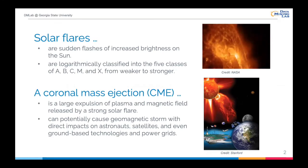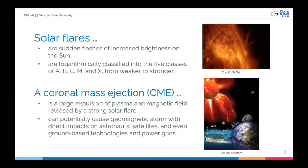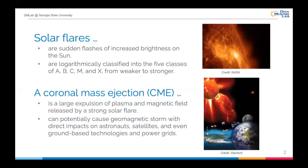Based on our understanding of flares, a coronal mass ejection, or CME, is released by a strong solar flare, which is a large explosion of plasma and magnetic field. CME can potentially cause geomagnetic storms with direct impacts on astronauts, satellites, and even ground-based technologies and pathways.